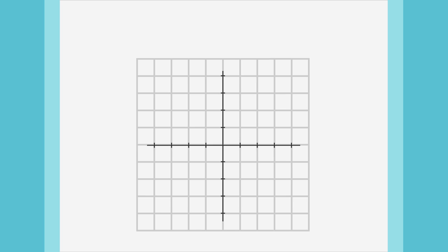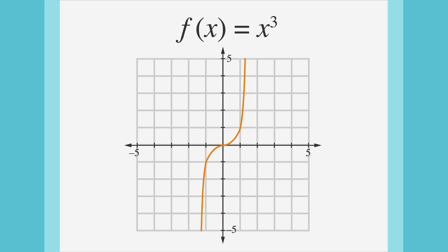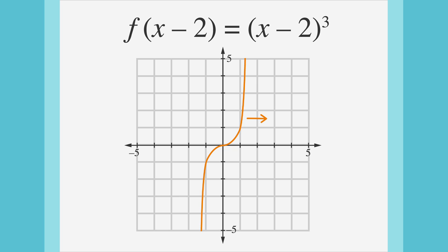Let's start with the basic function f of x equals x cubed. How do we shift the function to the right by 2? We'd subtract 2 from every x value, making sure to put parentheses around the x minus 2. The shifted function would be f of the quantity x minus 2, and the new equation would be x minus 2 quantity cubed.